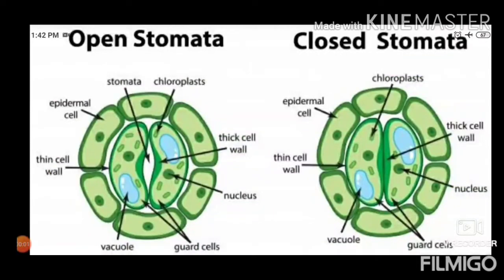Now let's study the structure of stomata in leaves. Here, two stomata cells are shown. Stomata means an opening which opens for breathing in the leaf. Around that opening are guard cells, which have a nucleus, a vacuole, and a thin cell wall, with epidermal cells around them. The chloroplasts provide green pigment formation. On the left side it shows open stomata. Just as we breathe through our nose and lungs, plants also breathe, but through the stomata.